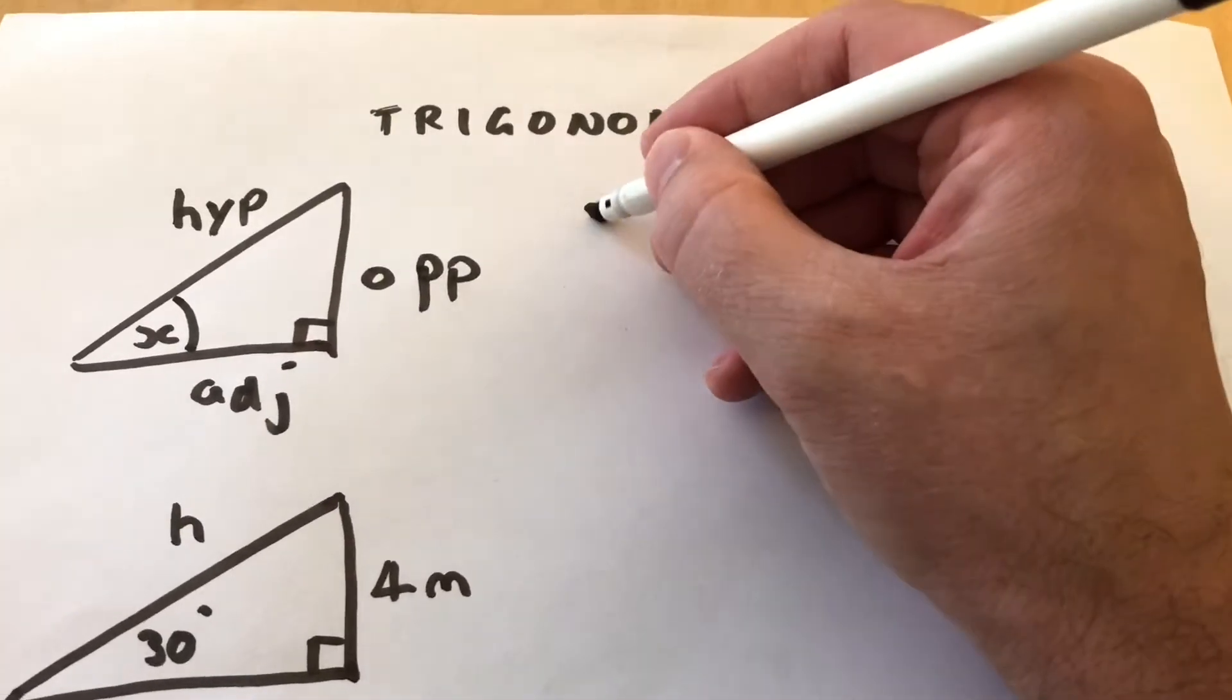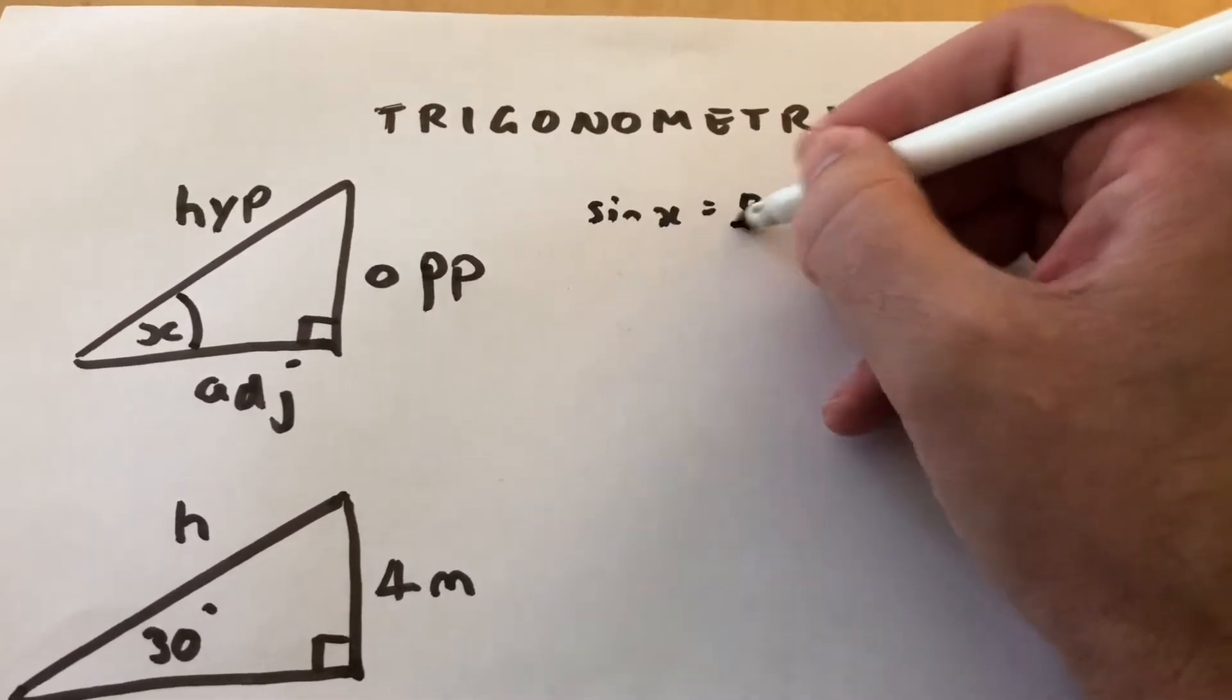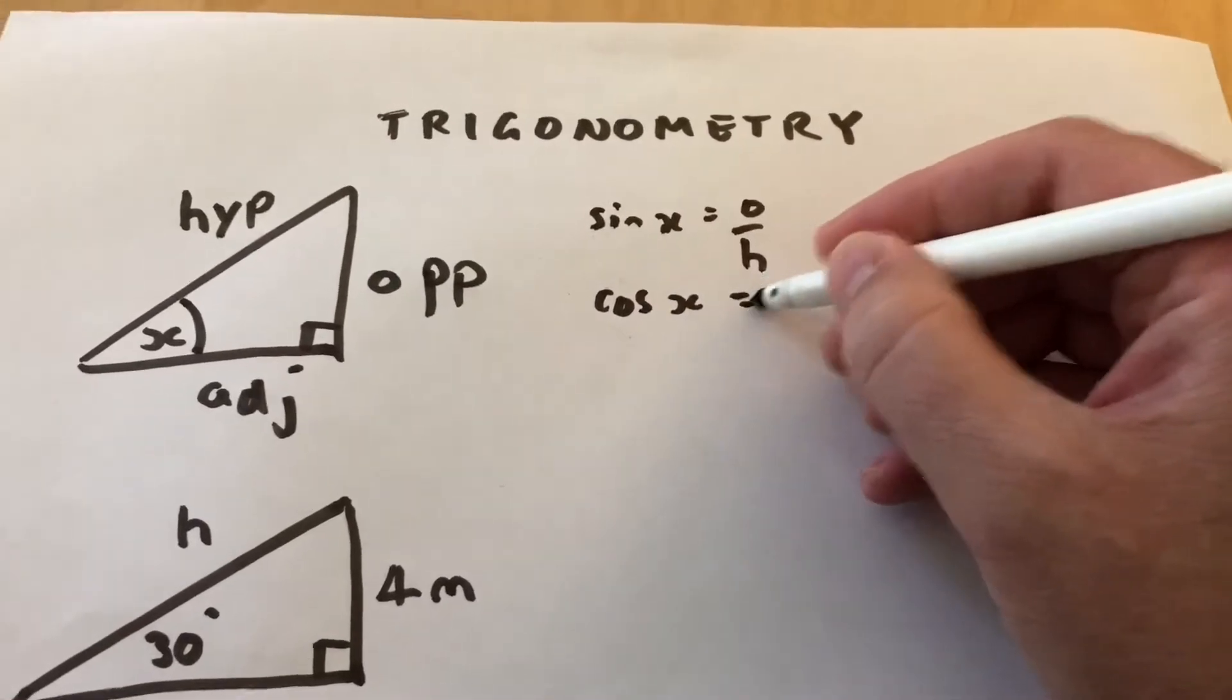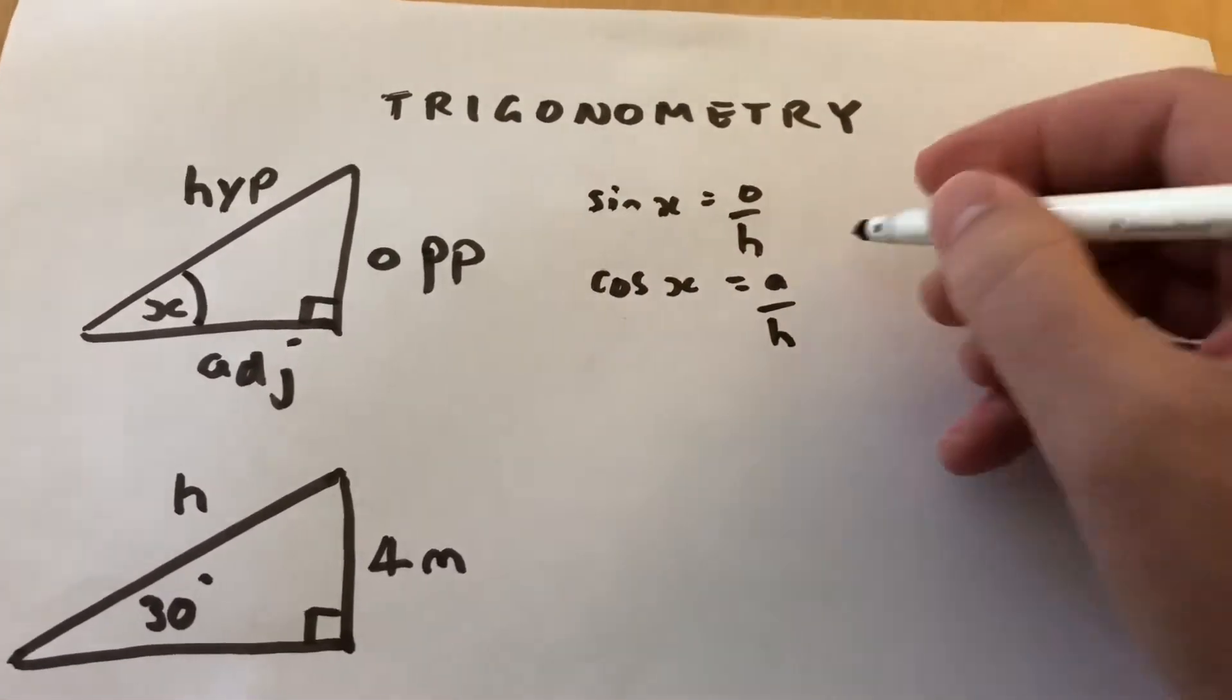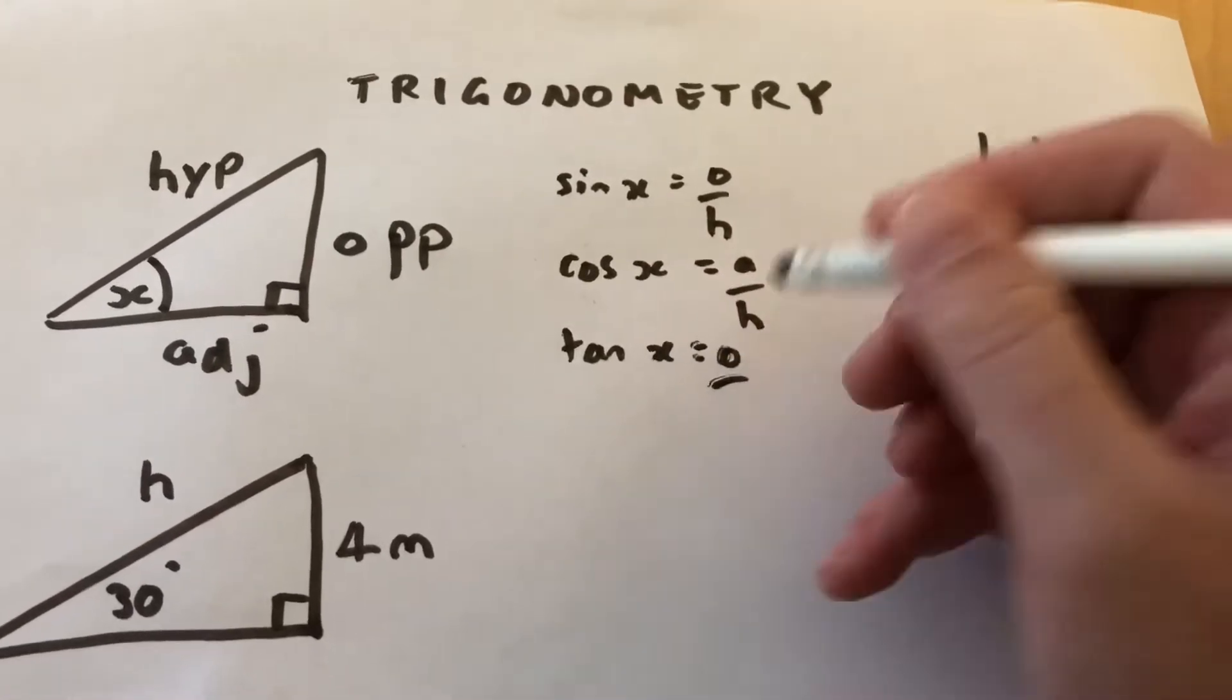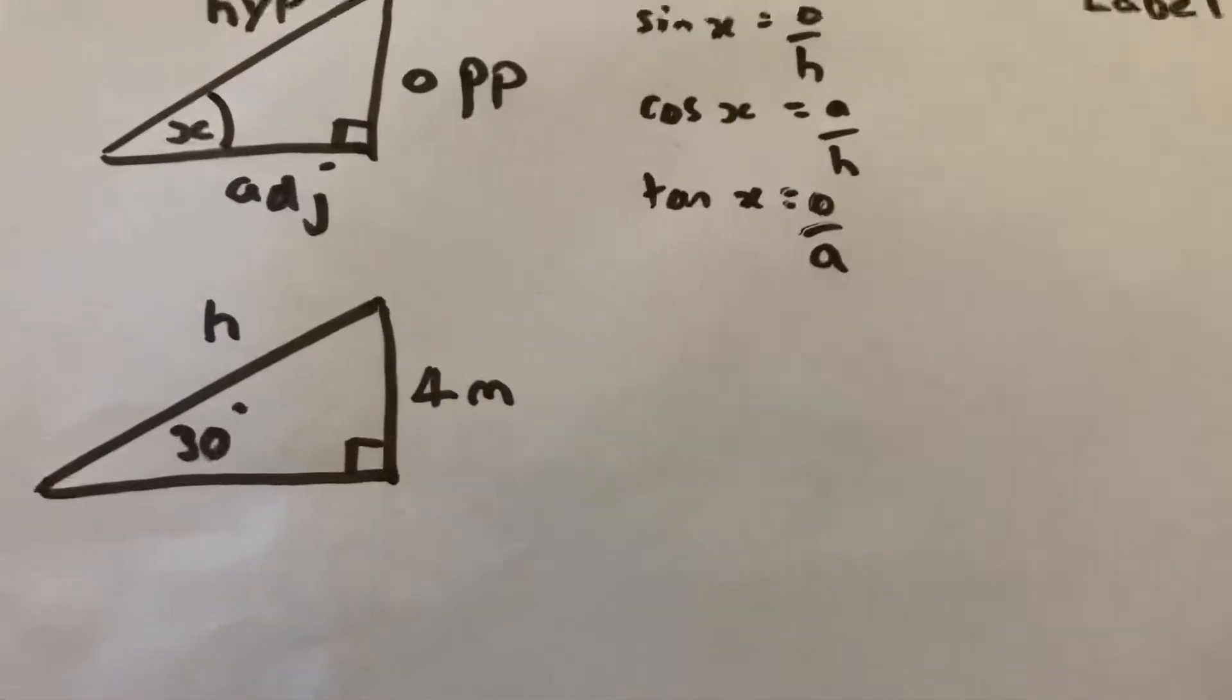So we hopefully remember our trig ratios: sine of X is opposite over hypotenuse, cos of X is adjacent over hypotenuse, and the third one, tan, is opposite over adjacent. So let's look at a quick question.